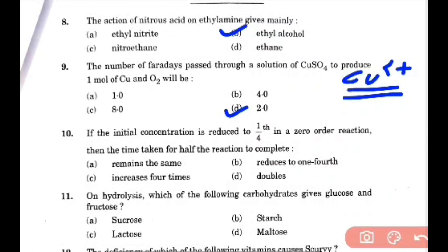Now let's see the tenth one. If the initial concentration is reduced to 1/4th in a zero order reaction, then time taken for half the reaction to complete is reduced to 1/4th. On hydrolysis, which carbohydrate gives glucose and fructose? That is option A, sucrose.